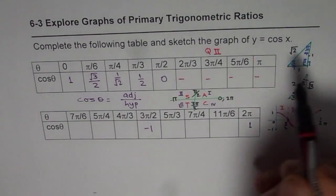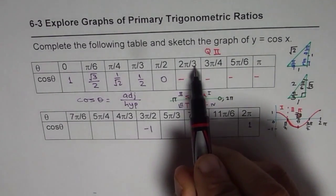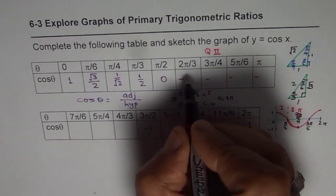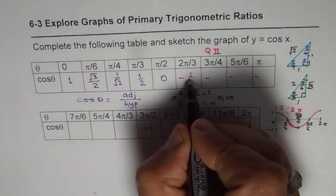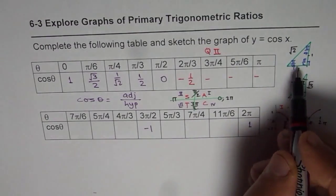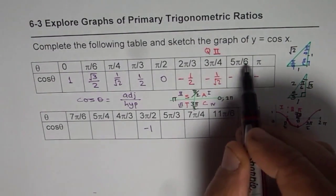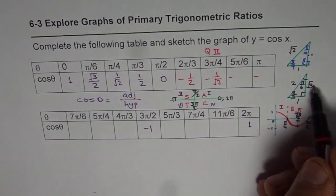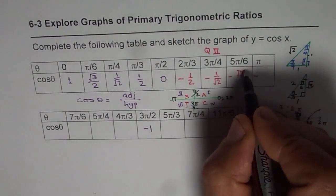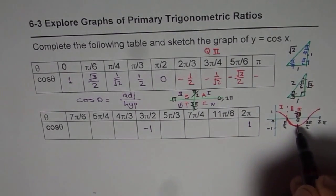Looking back at the special triangles for quadrant 2: at 2 pi by 3, the acute angle is pi by 3, so cosine is negative 1 over 2. At 3 pi by 4, the acute angle is pi by 4, giving negative 1 over square root 2. At 5 pi by 6, the acute angle is pi by 6, so adjacent is square root 3 over 2 — negative. At pi, go back to the diagram — cosine is minus 1.